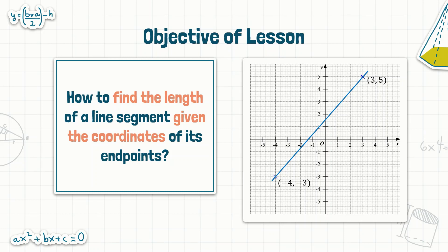If we take a look at the diagram shown on the right, we have the coordinates given for the endpoints of this particular line segment. The endpoints have the coordinates negative 4, negative 3, as well as 3, 5. So using these coordinates, how are we to determine the length of this particular line segment?